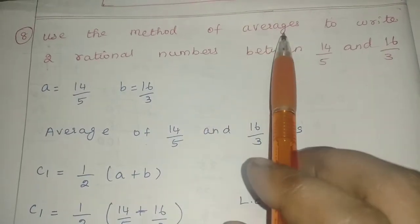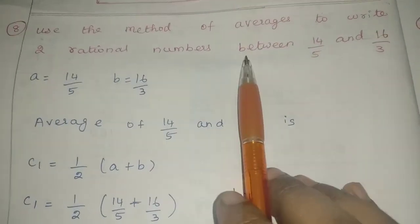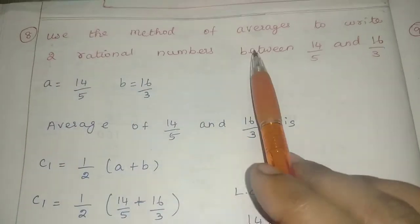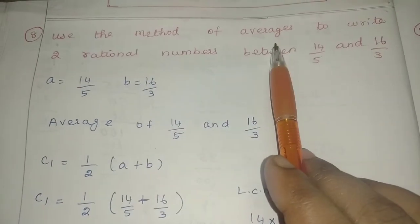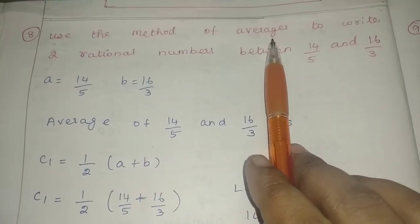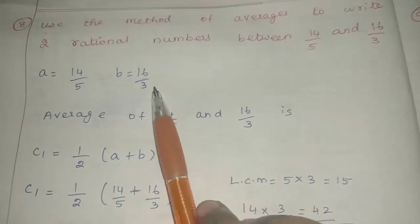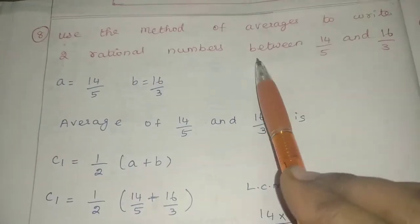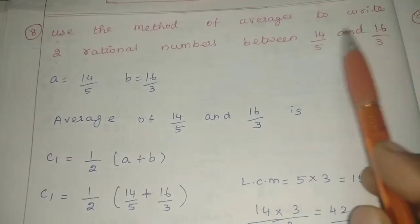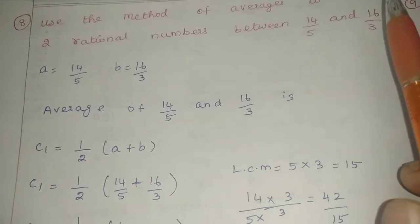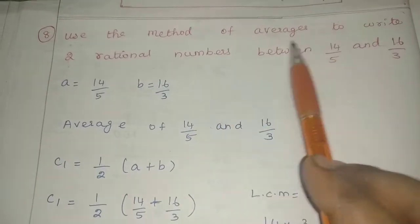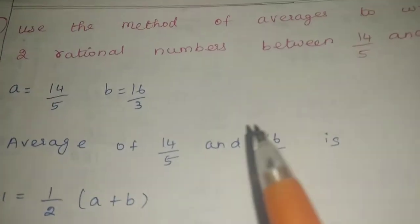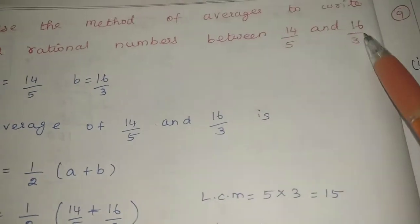Use the method of average to write 2 rational numbers between 14 by 5 and 16 by 3. Now, what I say is the method of average. So the method of average — we will see what the formula is. The formula will tell us how to find two rational numbers between the two given rational numbers: 14 by 5 and 16 by 3.